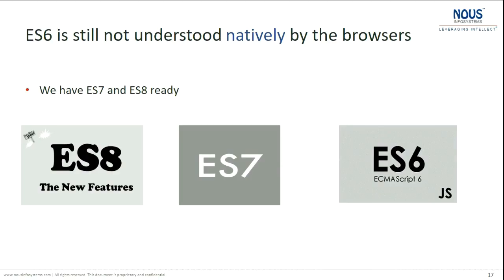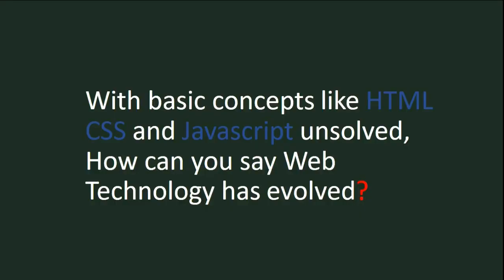An advanced version of JavaScript — ES6 — is still not natively understood by the browser. We have to use transpilers to transpile it into ES5, which is understood by the browser. So with these three building blocks of the web having so many issues, there are so many unsolved things in these three technologies. How can you say that the web has evolved?